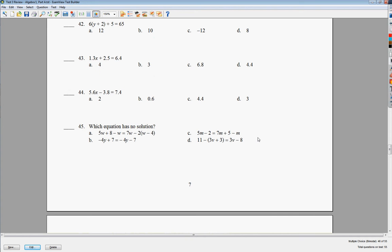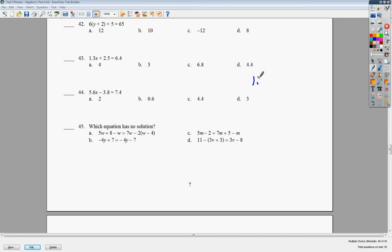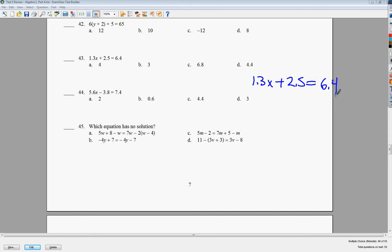The first question says 1.3x plus 2.5 equals 6.4, so I'm going to set it up. I'm going to draw my line here. Me, friend, friend to friend, so I need to subtract 2.5 because the opposite of addition is subtraction. You end up with 3.9. This shows times, so I need to divide. x is equal to 3.